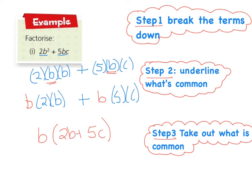We can check, just to ensure that we've done that right, and if I did a little quick check, b by 2b gives me 2b squared, and b by plus 5c gives me plus 5bc. So just a little check to ensure that I ended up at the start. So there are the three steps we're going to follow. Break the term down, underline what's common, and take out what's common.